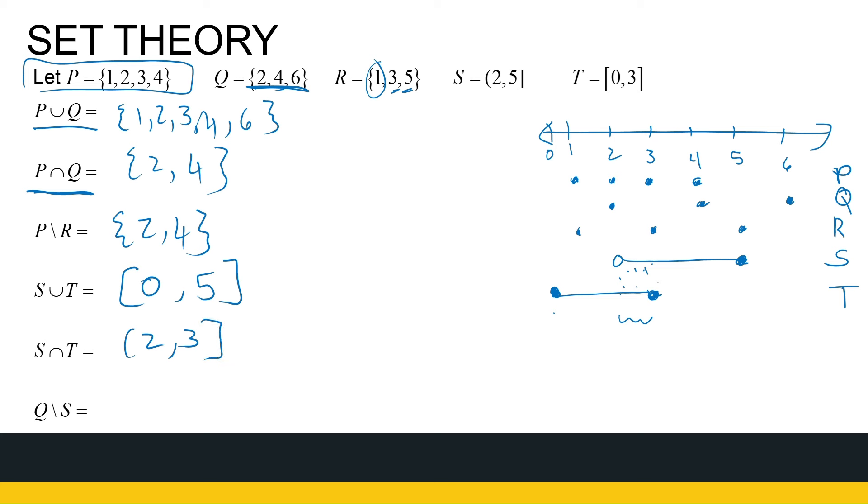And then Q without S. I start with a set Q. What does Q have? Two, four, six. Q has two, four, six in. I take S away. S has got a lot of stuff in. But I'm only taking away what is actually in Q. So I start with Q. I look at the number two. Is the number two in S? No, two is not in S. I don't take it away. So it stays. What about the number four? Is the number four in S? Four is in S? Yes. So I take it away because I want Q without S. So I'm taking four away. Number six, is it in S? No, it's not in S. So six stays. So Q without S is two and six.